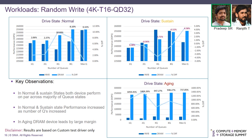In the case of random write with 4K chunk size, 16 threads, queue depth 32, the results are almost the same as the one-thread case. In normal and sustained states both performed on par with each other, and in the aging state DRAM led by a large margin over HMB.